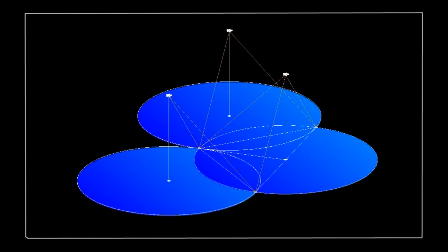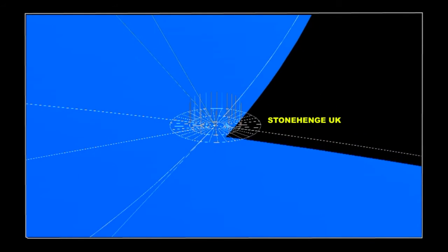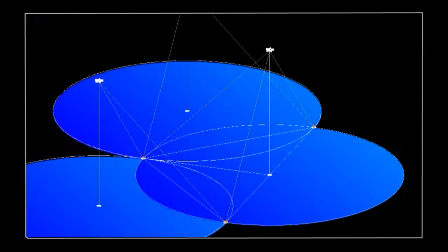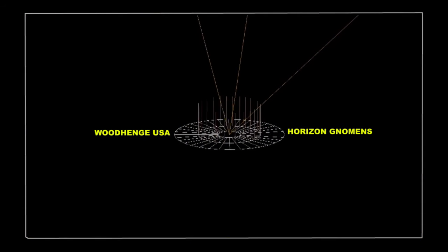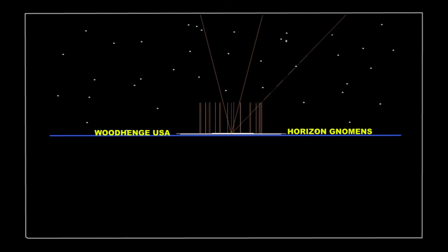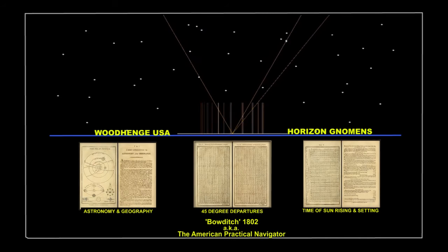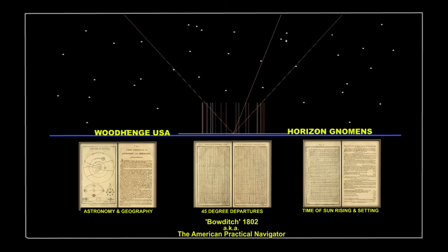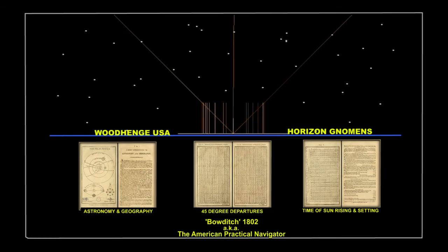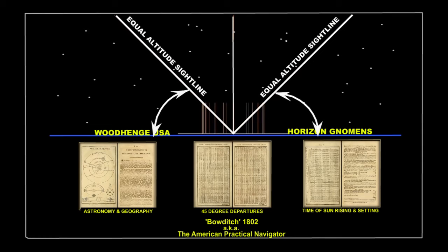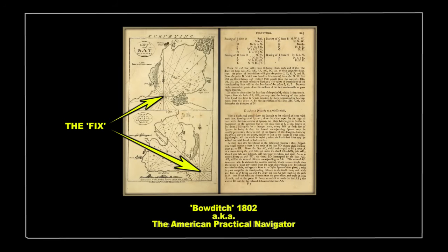This is how and why the Gnomons at Stonehenge, Woodhenge, and Tiwanaku were ingeniously configured and joined together, to ultimately allow for the creation of the first precise almanacs, terrestrial maps, and celestial charts, to be produced on a global scale, by providing the means of recording and subsequently plotting each accurate fix.